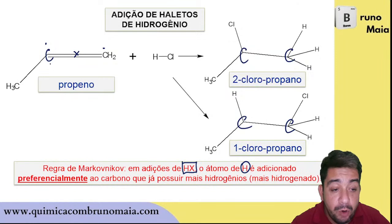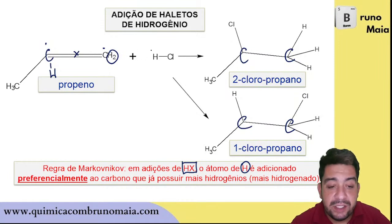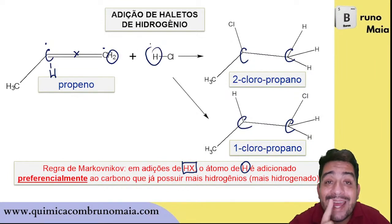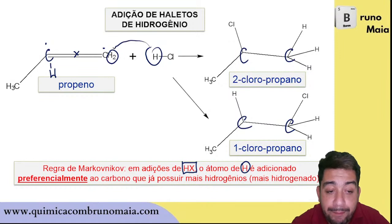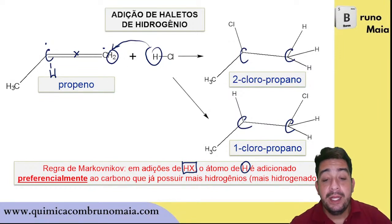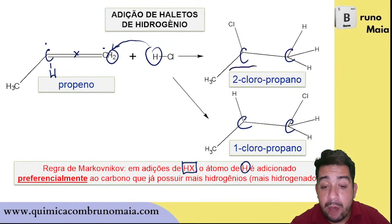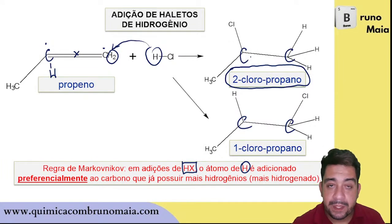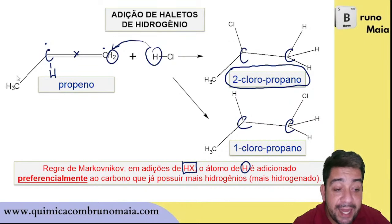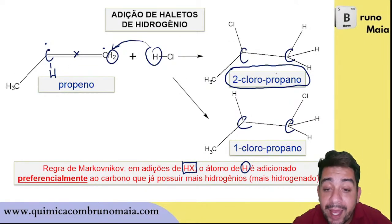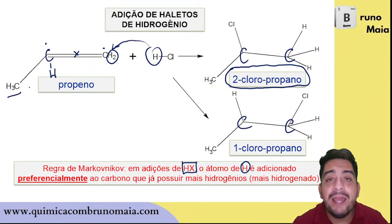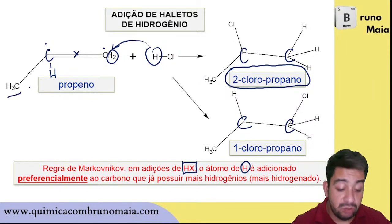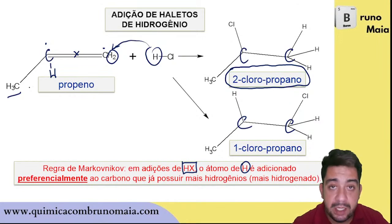Now, a question: the terminal left carbon has three hydrogens — yes, but that carbon is not involved in the addition. Only the carbons where the pi bond was located matter. So keep Markovnikov's rule in mind. Note that in the ethene example both carbons are identical, so there is no difference regardless of where the atoms go.